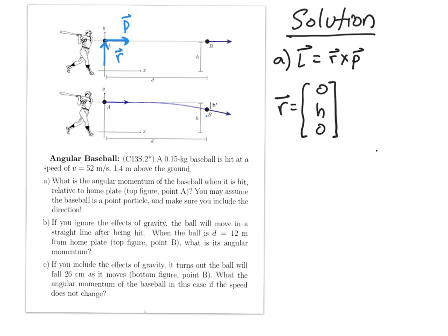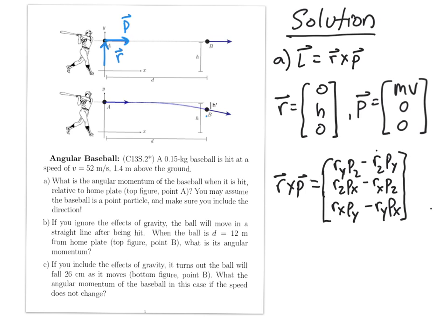So the radius vector is [0, h, 0]. That's the x component of the radius vector, the y component, and the z component. And of course, the y component is just the height of the baseball. The momentum vector is simply in the x direction, m times v, because the velocity is entirely in the x direction, and then 0 in the y direction and 0 in the z direction. So the cross product is just given by this formula. You can get this formula by, for instance, using the determinant trick, or you can simply memorize it, or you can look it up in your favorite textbook.